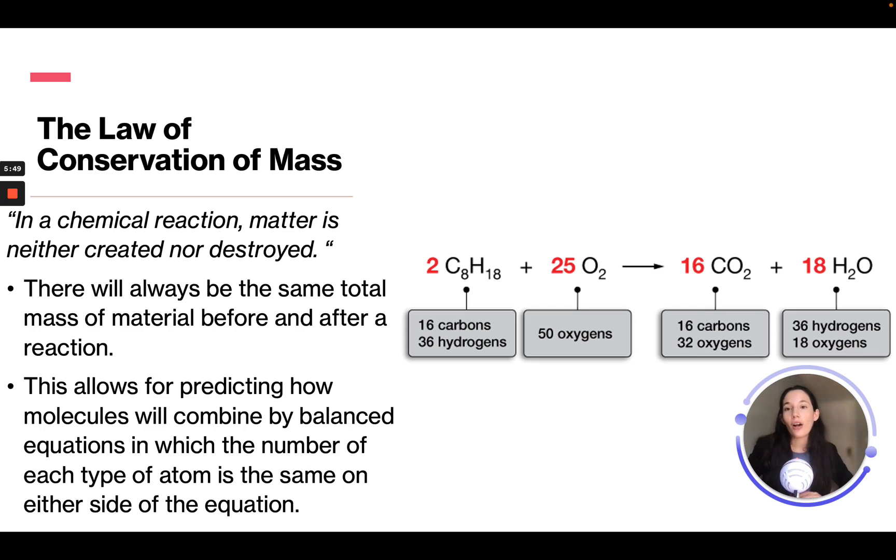The law of conservation of mass states that in a chemical reaction, matter is neither created nor destroyed. There will always be the same number of mass of materials before and after a reaction. This allows for predicting how molecules will combine by balancing equations in which the number of each type of atom is the same on either side.